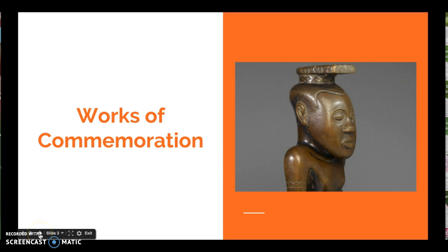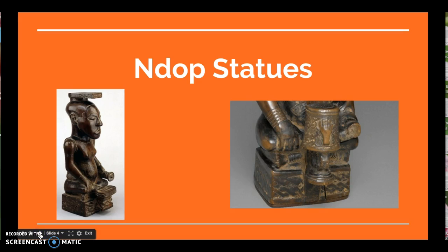Now let's get into the details of this particular N'Dop statue. N'Dop statues in general are the most identifiable form of Kuba art — the word N'Dop actually means statue. They're a genre of wood carvings meant to commemorate particular Kuba leaders. Notice the rounded contours that define the head, shoulders, stomach, and collarbone. It's very naturalistic, not at all idealized.